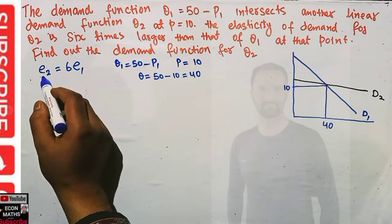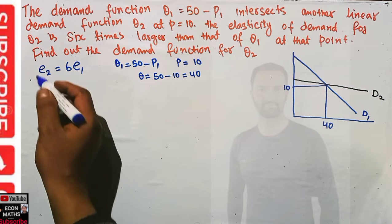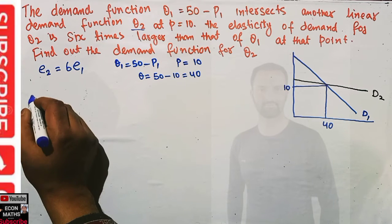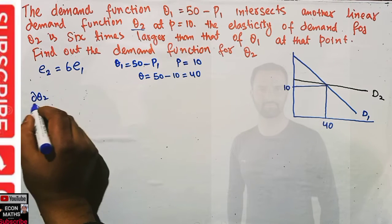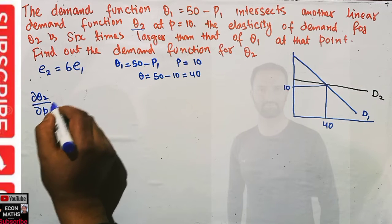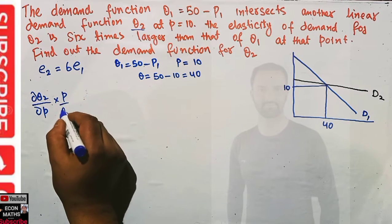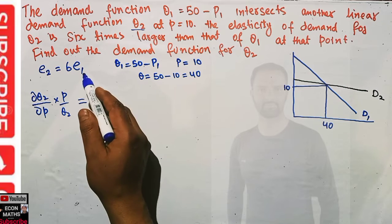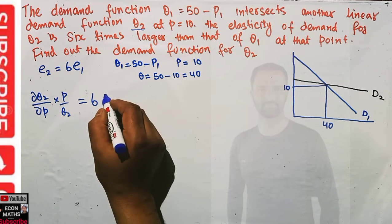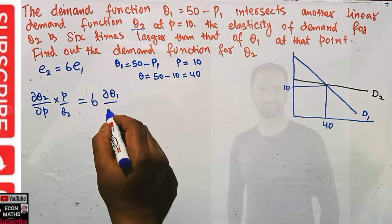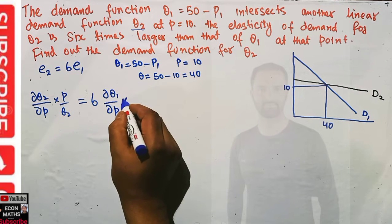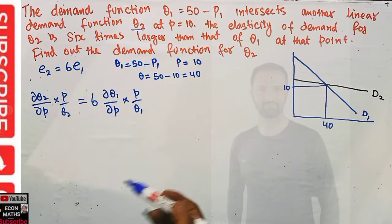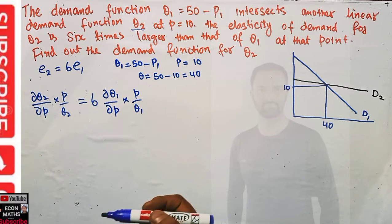The formula for elasticity of demand for q2 will be equal to the derivative dq2/dp multiplied by p upon q2. This should be equal to six times the elasticity of demand for q1, which is simply dq1/dp multiplied by p upon q1. This gives us the relationship between the two demand functions via their elasticity.